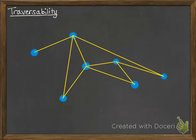What this means is whether you can draw this without lifting your pencil off the paper and not going over any line more than once.